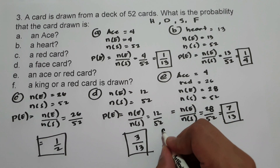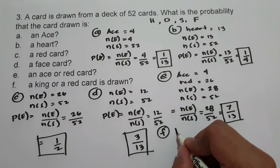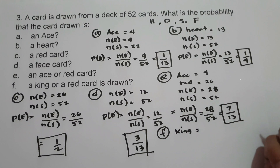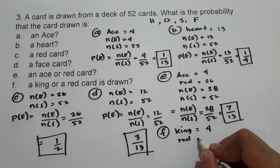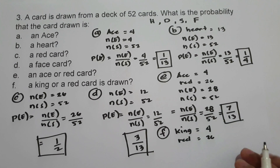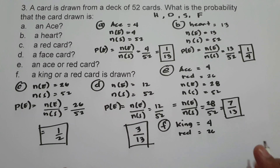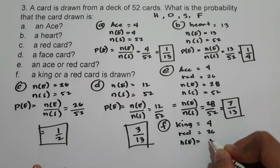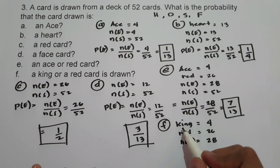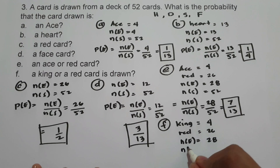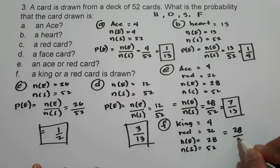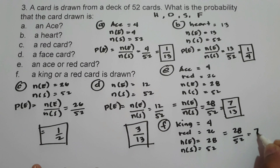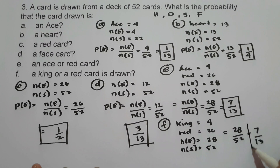On letter F, a king and a red card. We have 4 king cards and 26 red cards. Same as letter E, the number of favorable outcomes is 28, because 2 of the king cards belong to red. The number of possible outcomes is 52, so the probability is 28 over 52, or simply 7 over 13. This will be our answer.